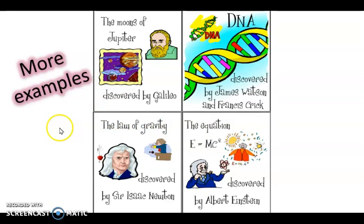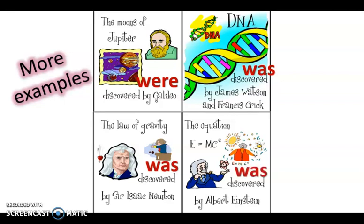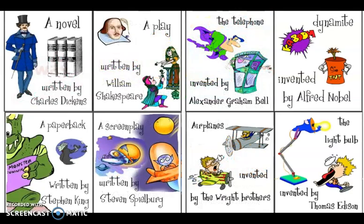Here we have more examples. Con esto hemos terminado la sección de ejercicios de esta actividad — son ejercicios de práctica, no es obligatorio que los entregues a tu maestro, sin embargo te sirven para practicar. More examples: 'The moons of Jupiter were discovered by Galileo.' 'DNA was discovered by James Watson.' 'The law of gravity was discovered by Sir Isaac Newton.' 'The equation was discovered by Albert Einstein.' You can pause the video to check them carefully.